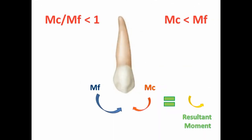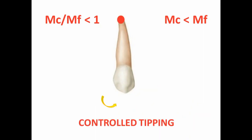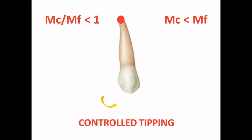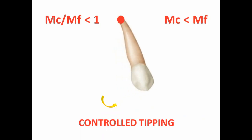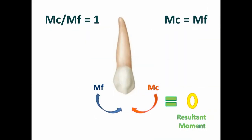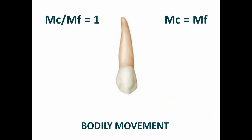In the next case, the ratio of moment of couple to moment of force is less than 1, which means moment of force is greater than moment of couple. Tooth movement due to the resultant moment is controlled tipping. Furthermore, when the ratio of moment of couple to moment of force is equal to 1, moment of force equals moment of couple, hence there is no resultant moment, leading to bodily tooth movement.